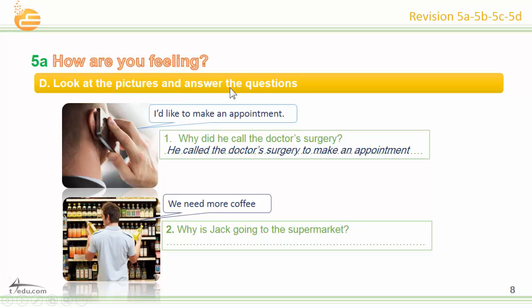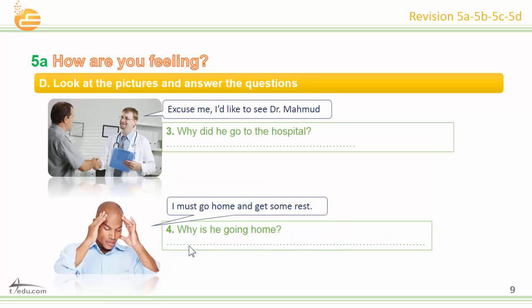Look at the pictures and answer the questions. Example: Why did he call the doctor's surgery? He called the doctor's surgery to make an appointment. Number two: Why is Jack going to the supermarket? Jack is going to the supermarket to buy some coffee. Number three: Why did he go to the hospital? He went to the hospital to see Dr. Mahmoud. Number four: Why is he going home? He is going home to get some rest.